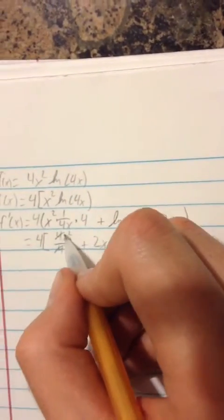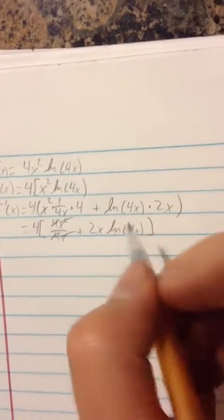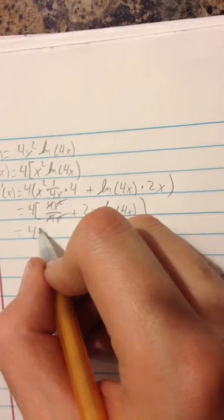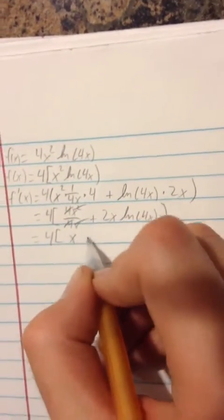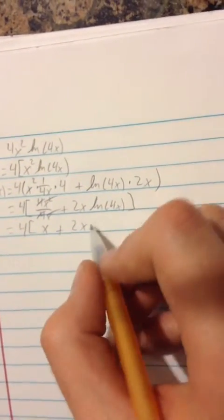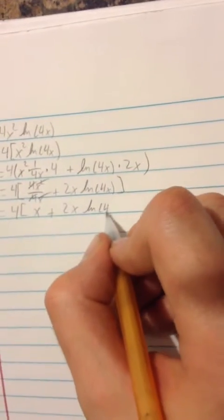Alright, your 4s are going to cancel out and 1x will cancel out of the top. The x will be gone from the bottom. So you get 4 times x plus 2x natural log of 4x.